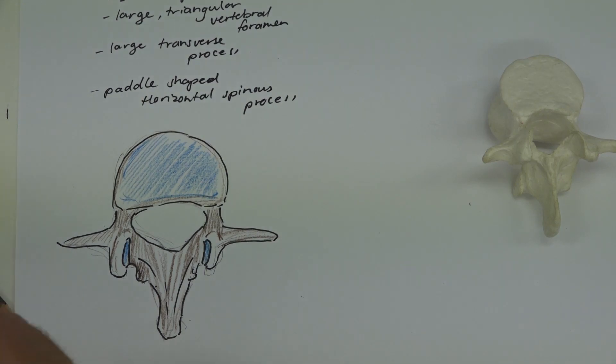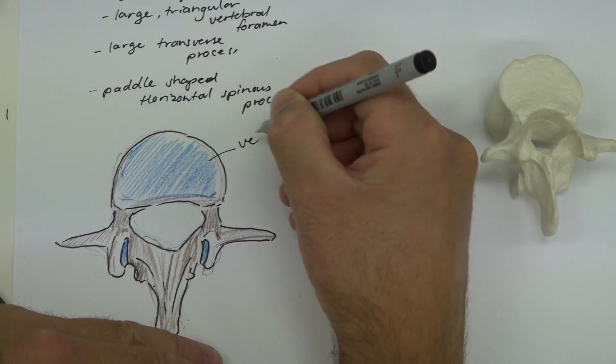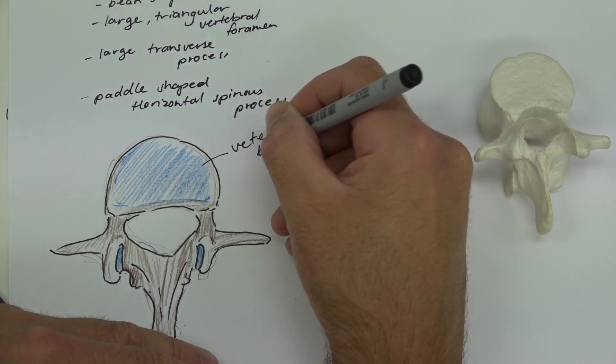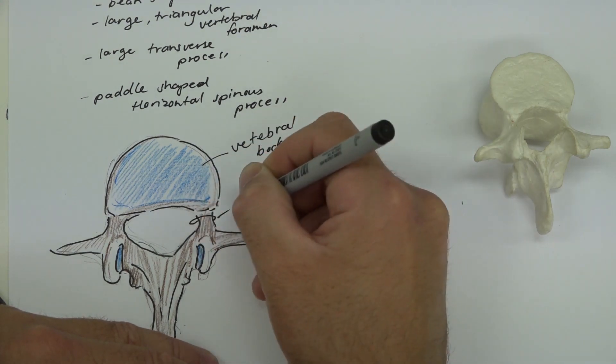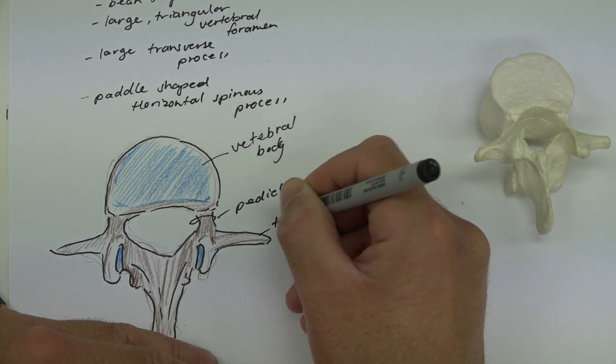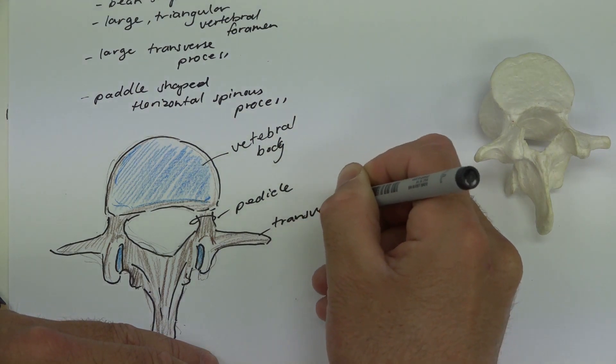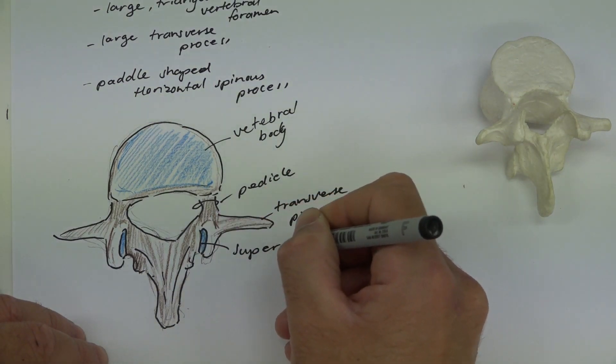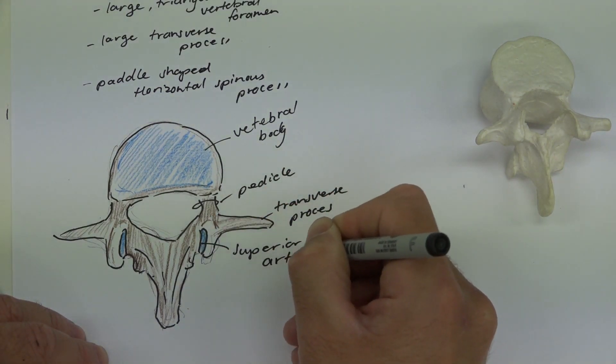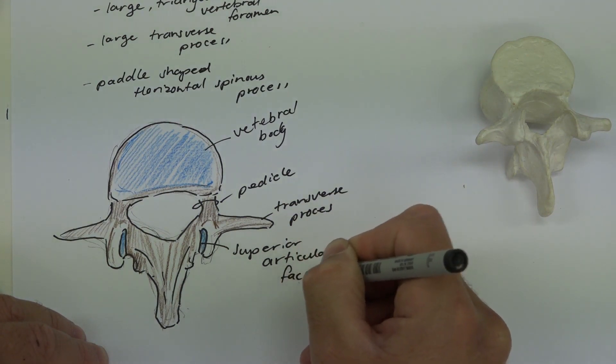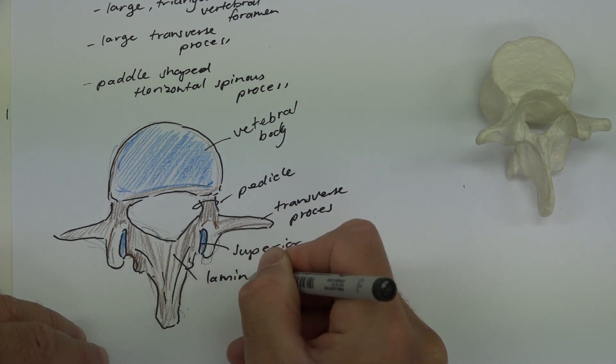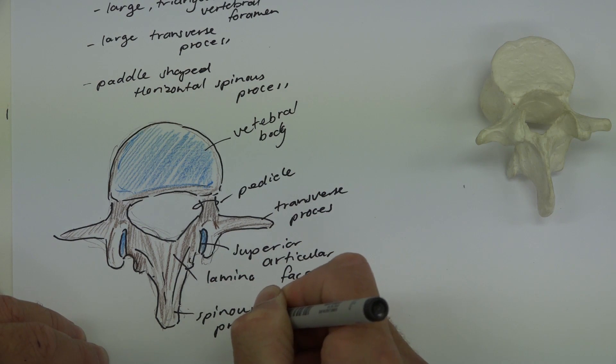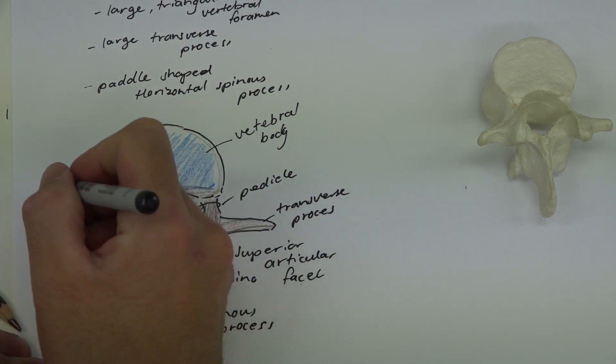All right, so let's have a go at labeling. This is a vertebral body. Pedicle. Transverse process. Superior articular facet. Lamina. Spinous process. And then vertebral foramen.